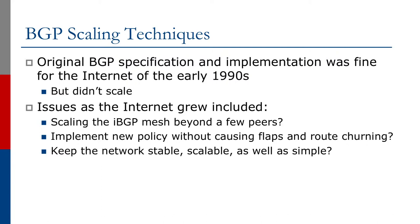Some of these issues include how do we scale the IBGP mesh beyond a few peers? If you remember from the IBGP discussion, IBGP must be fully meshed. That's fine for a small network of a few routers, but how do we scale this for a network with, say, a thousand routers?